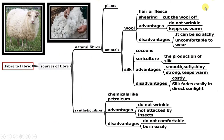Shearing — the process by which the fleece is removed from an animal is called shearing. Let us now learn about the advantages and disadvantages of wool fibers.